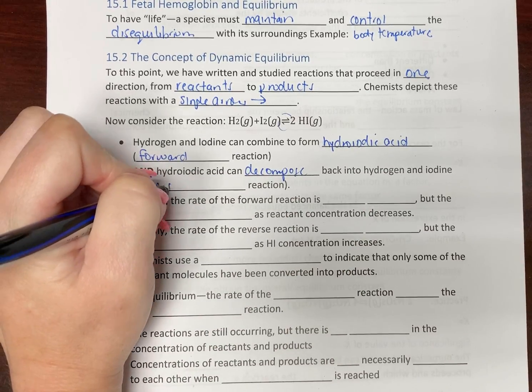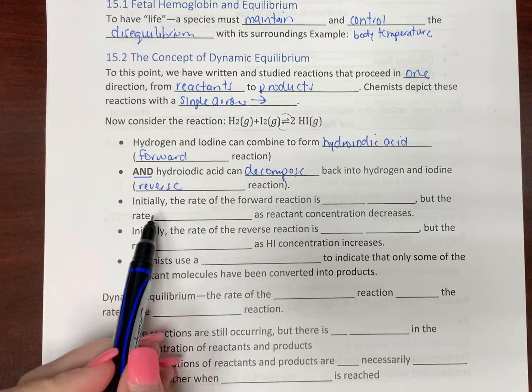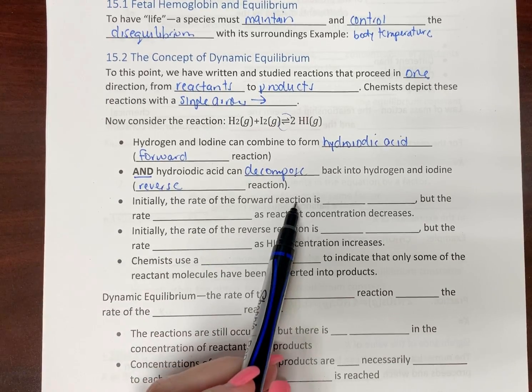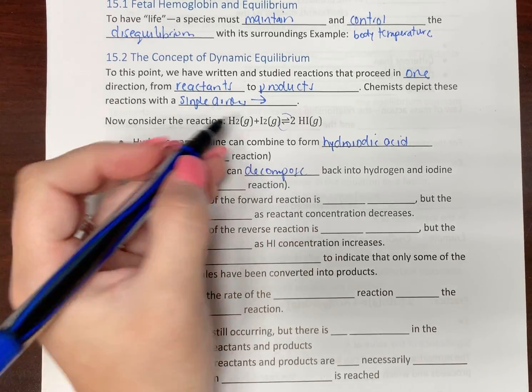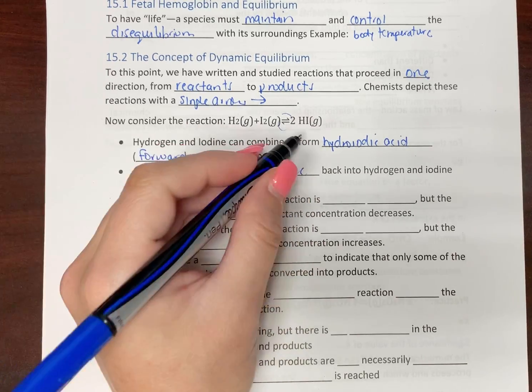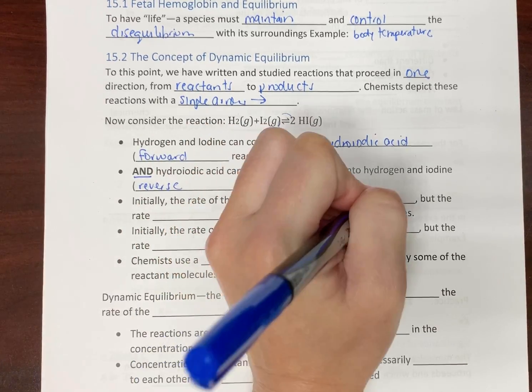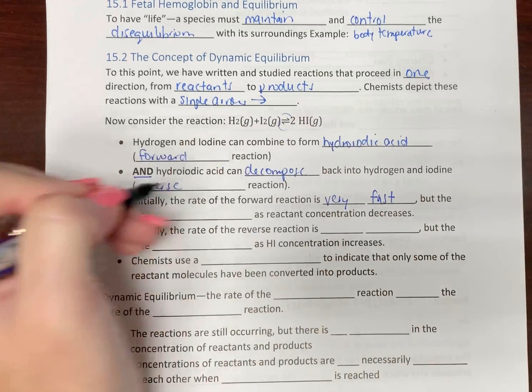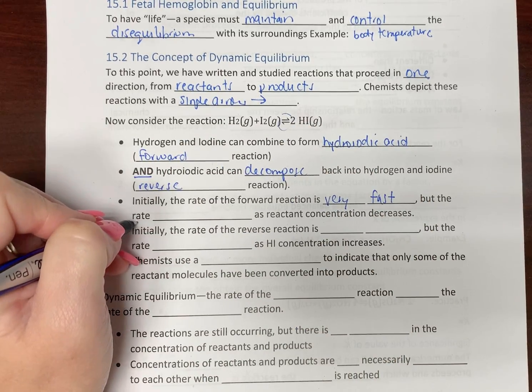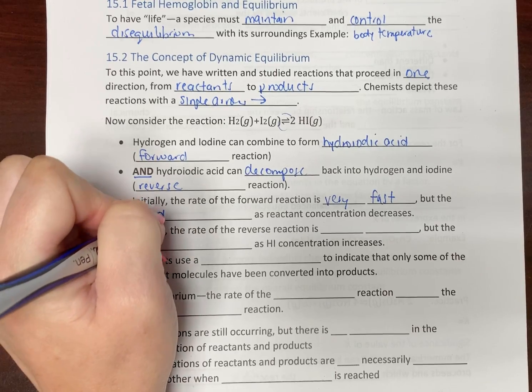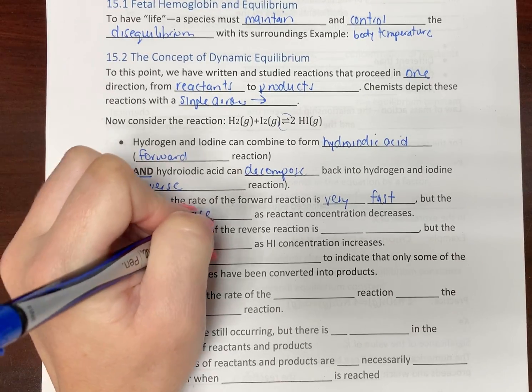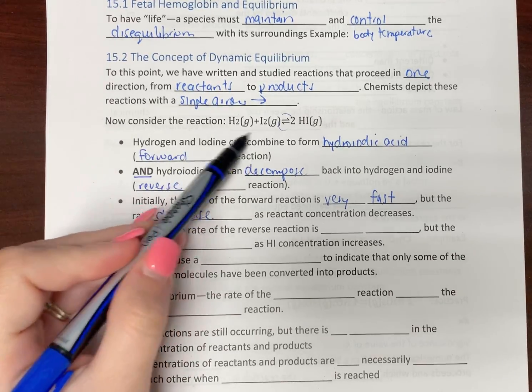Initially, the rate of our forward reaction is very fast. Initially we're going to go from left to right, and that's going to be very fast. But the rate, remember we talked about rates, is going to decrease as we use up our reactants.